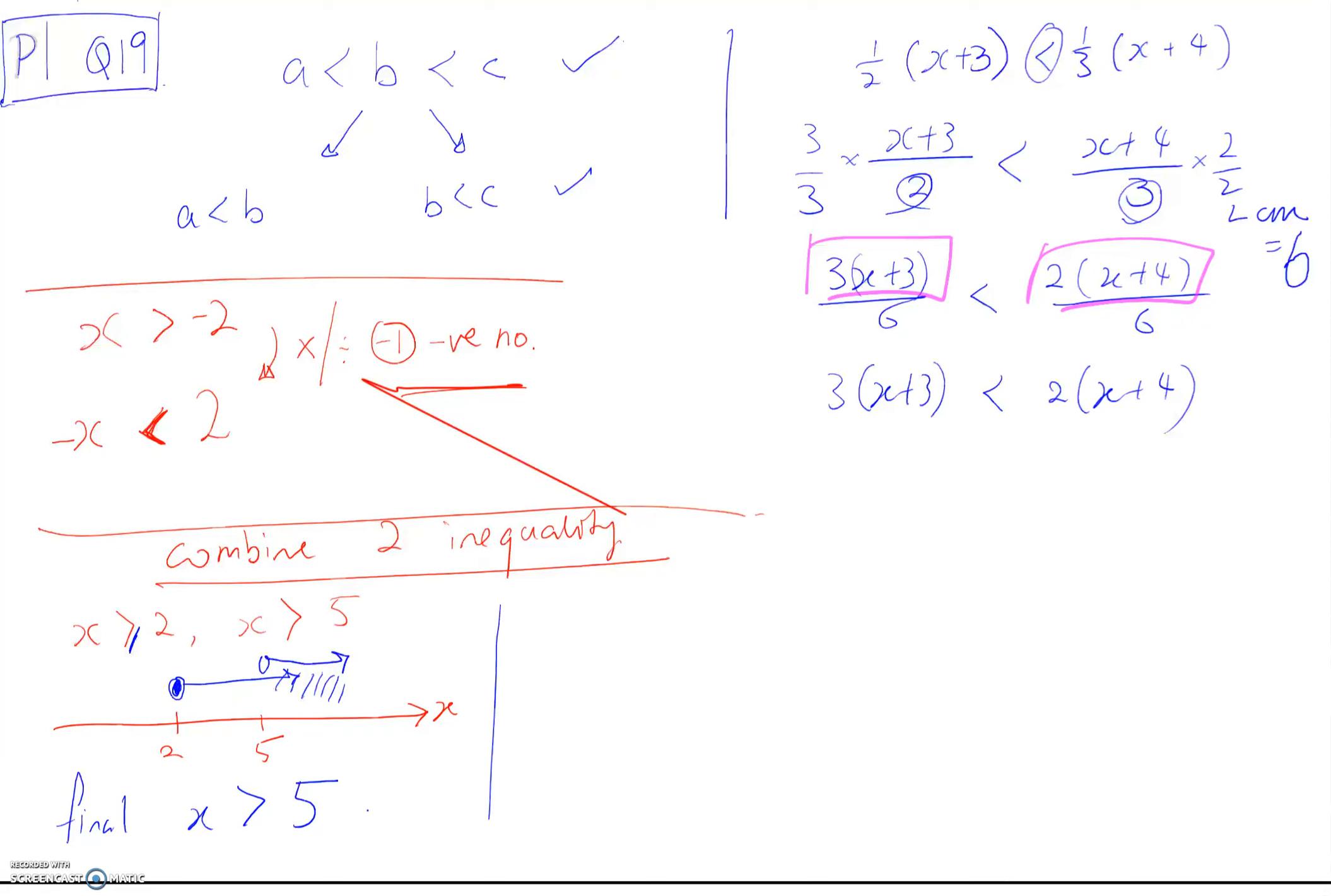Now there's another type: I have x more than 5, x less than 2. So this is 2, this is 5. This is more than, this is less than. No way I can combine, right? So if I cannot combine, then the answer is x more than 5 or x less than 2. If this is shaded, that means there's a line here, that means there's a line here.